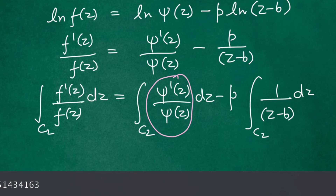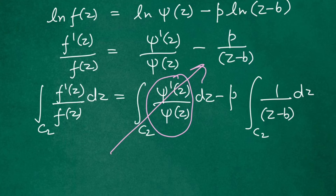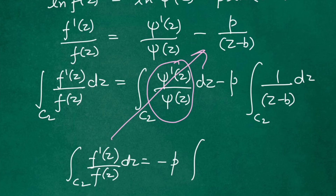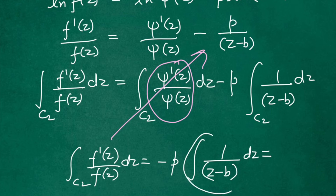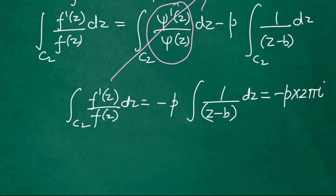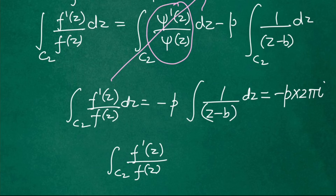Since ψ′(z)/ψ(z) is analytic inside C₂, by Cauchy's fundamental theorem that integral is 0. Using Cauchy's integral formula, the integral of 1/(z − b) along C₂ equals 2πi. Therefore, the integral of f′(z)/f(z) along C₂ equals −p · 2πi.